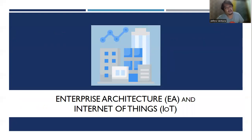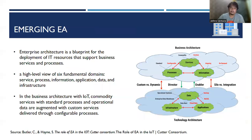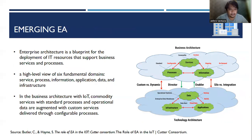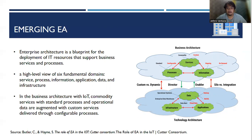Next is enterprise architecture, or EA, and the Internet of Things — how we can apply EA with IoT. Enterprise architecture is a blueprint for the deployment of IT resources that support business services and processes. EA is a high-level view of six fundamental domains: services, process, information, application, data, and infrastructure. EA aligns new technology capabilities with innovative business architecture processes and services. In the figure, the new architecture elements related to IoT are highlighted in red.